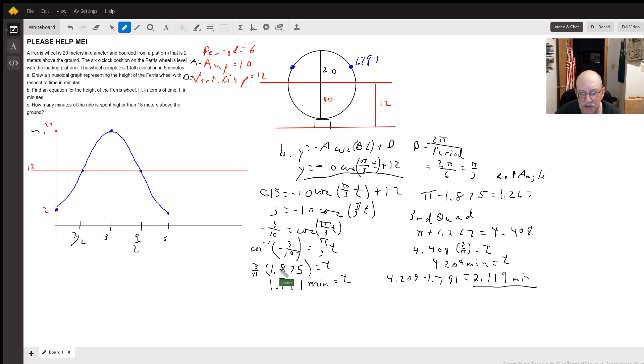So then I just substitute that 4.408 where I had the 1.875, and that's 4.408 times 3 over π again equals t. So it takes 4.209 minutes to get to where it's 15 feet above the ground again. So then you just subtract those two numbers, and I got a little round-off error in here, this should probably be an eight the way we did it. So it's going to take, when that Ferris wheel goes around, for 2.418 minutes you're above 15 feet.